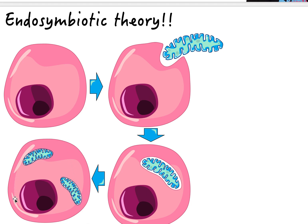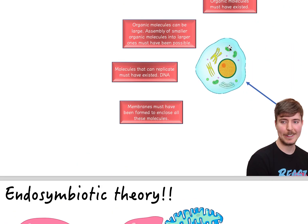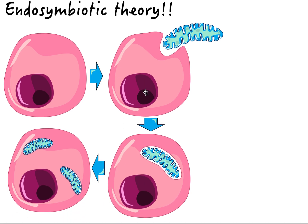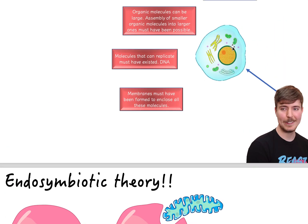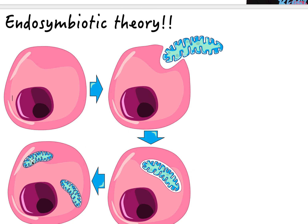Eventually, the smaller cell became a permanent part of the larger cell. Over a long time, the two started depending on each other and now actually need each other to survive. This is how organelles started to come together and how complicated cells were formed — specifically, this is the theory of how mitochondria started forming inside eukaryotic cells.